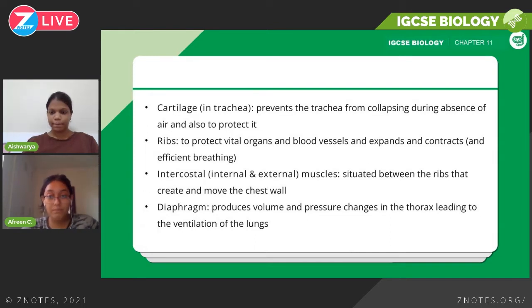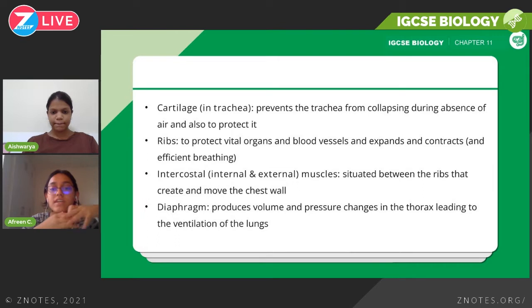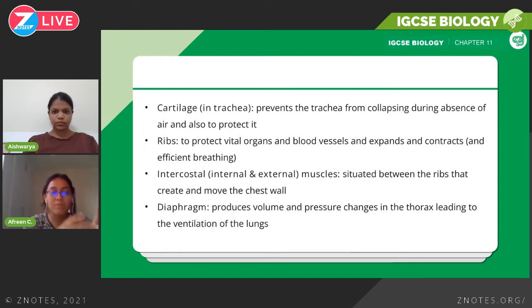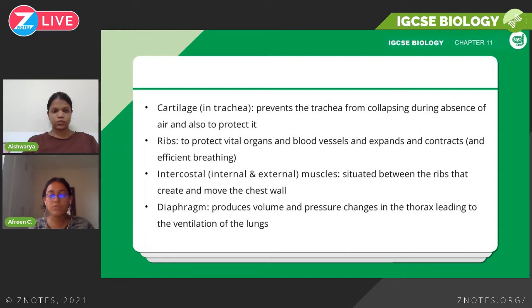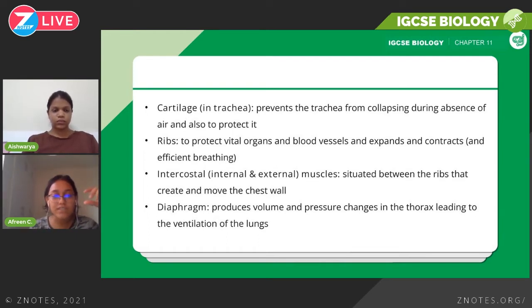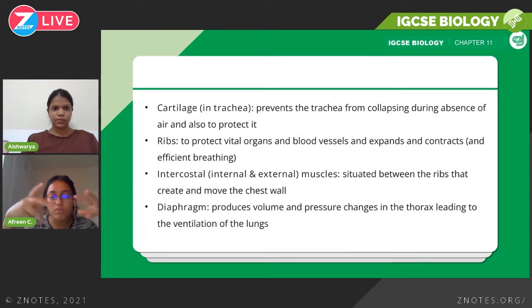Now we're looking at some of the parts in the human gas exchange system. There's the cartilage, which is found in the trachea. The main purpose of cartilage in the trachea is to prevent the trachea from collapsing when air inside is absent. Without cartilage, your trachea would collapse. So it basically acts as a support system, keeping the trachea standing even when air is absent.